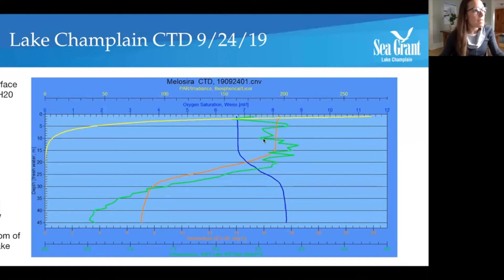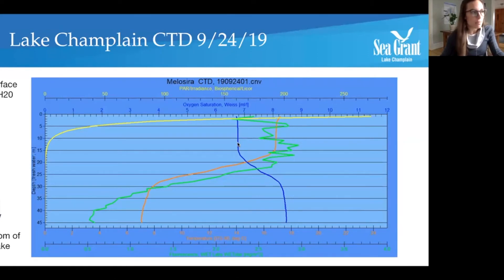Looking at our last two lines: our blue line is our level of dissolved oxygen throughout the water column. And looking at this line, you'll notice that the orange line, which is temperature, and the blue line are kind of like a mirror image of each other — think of like butterfly wings.